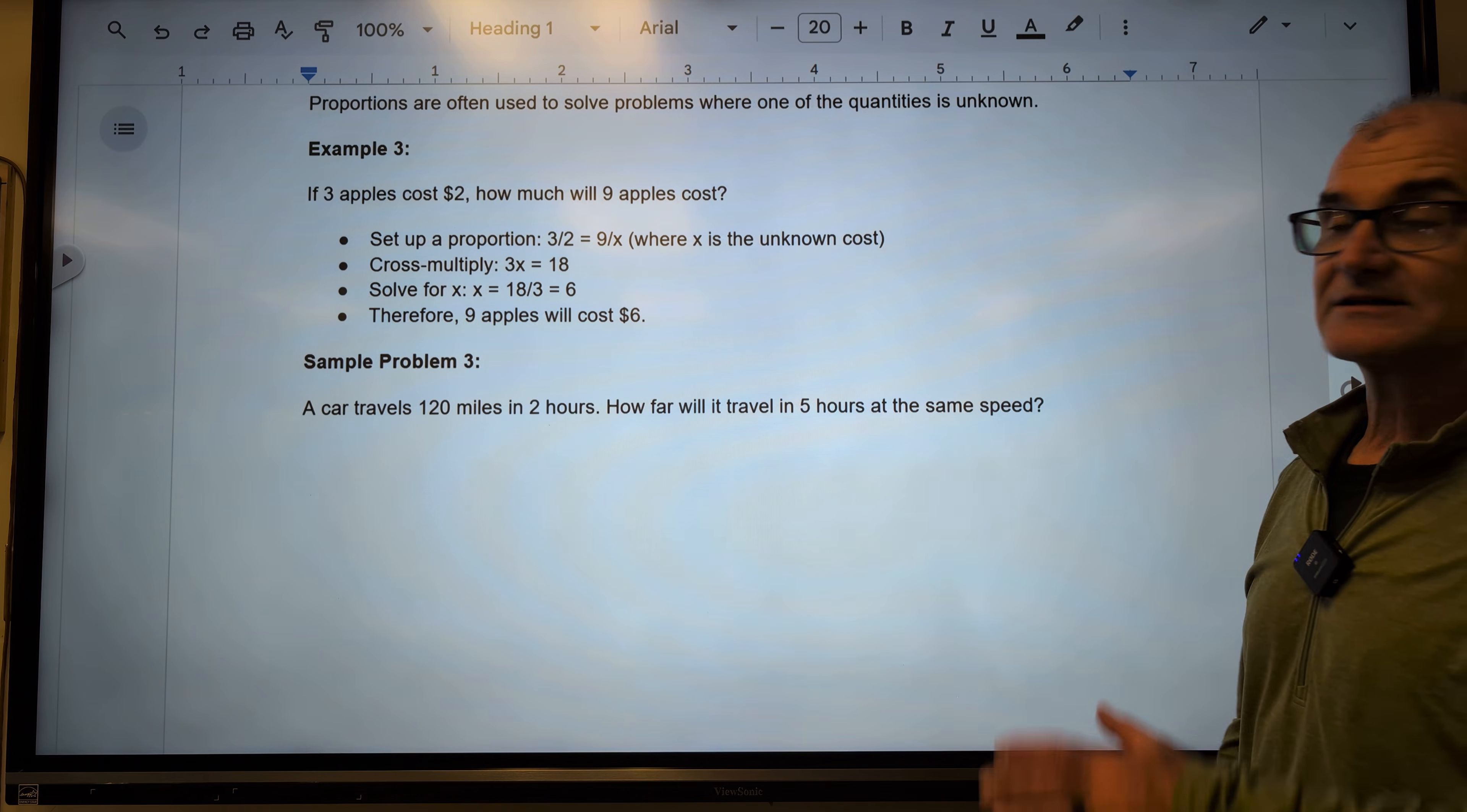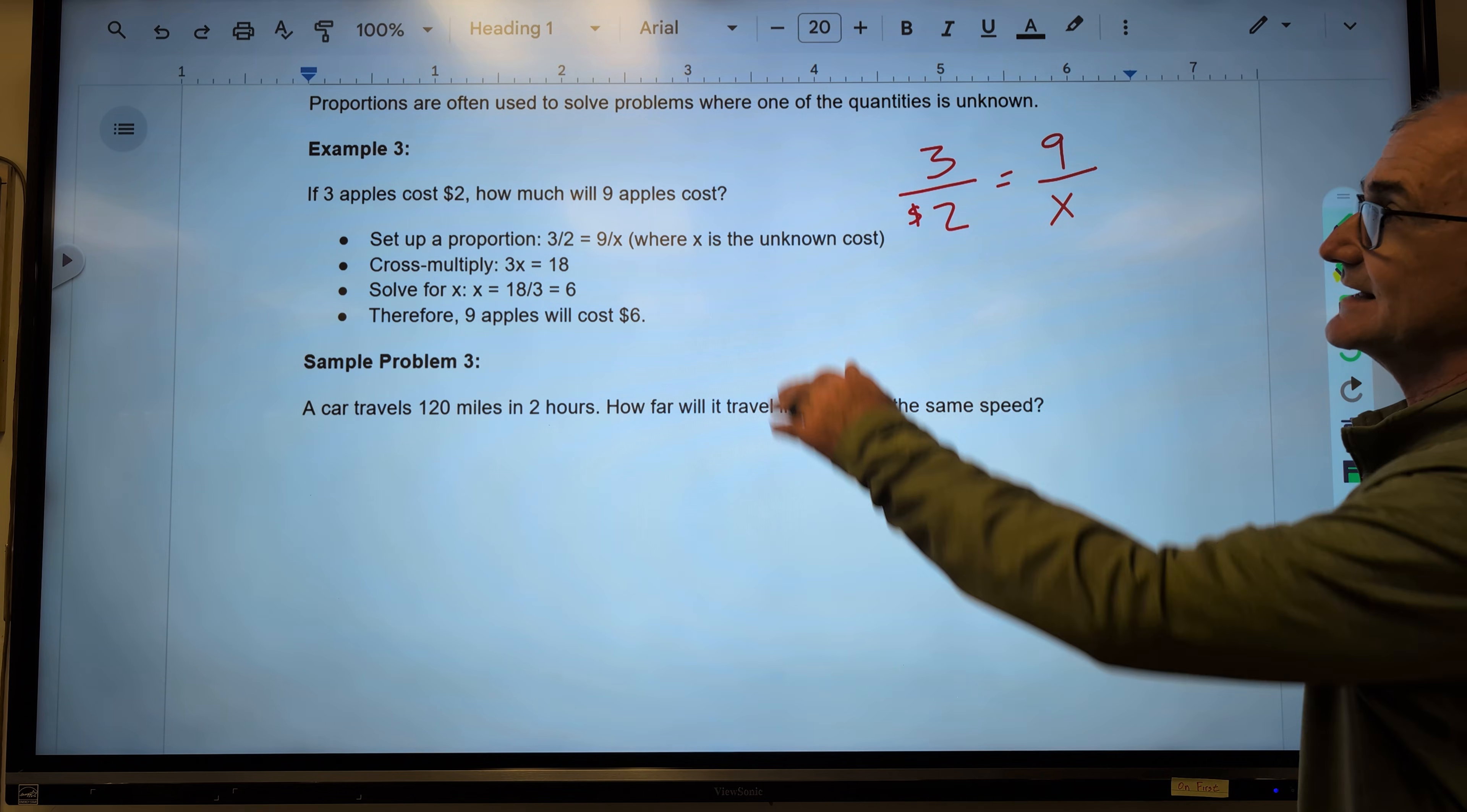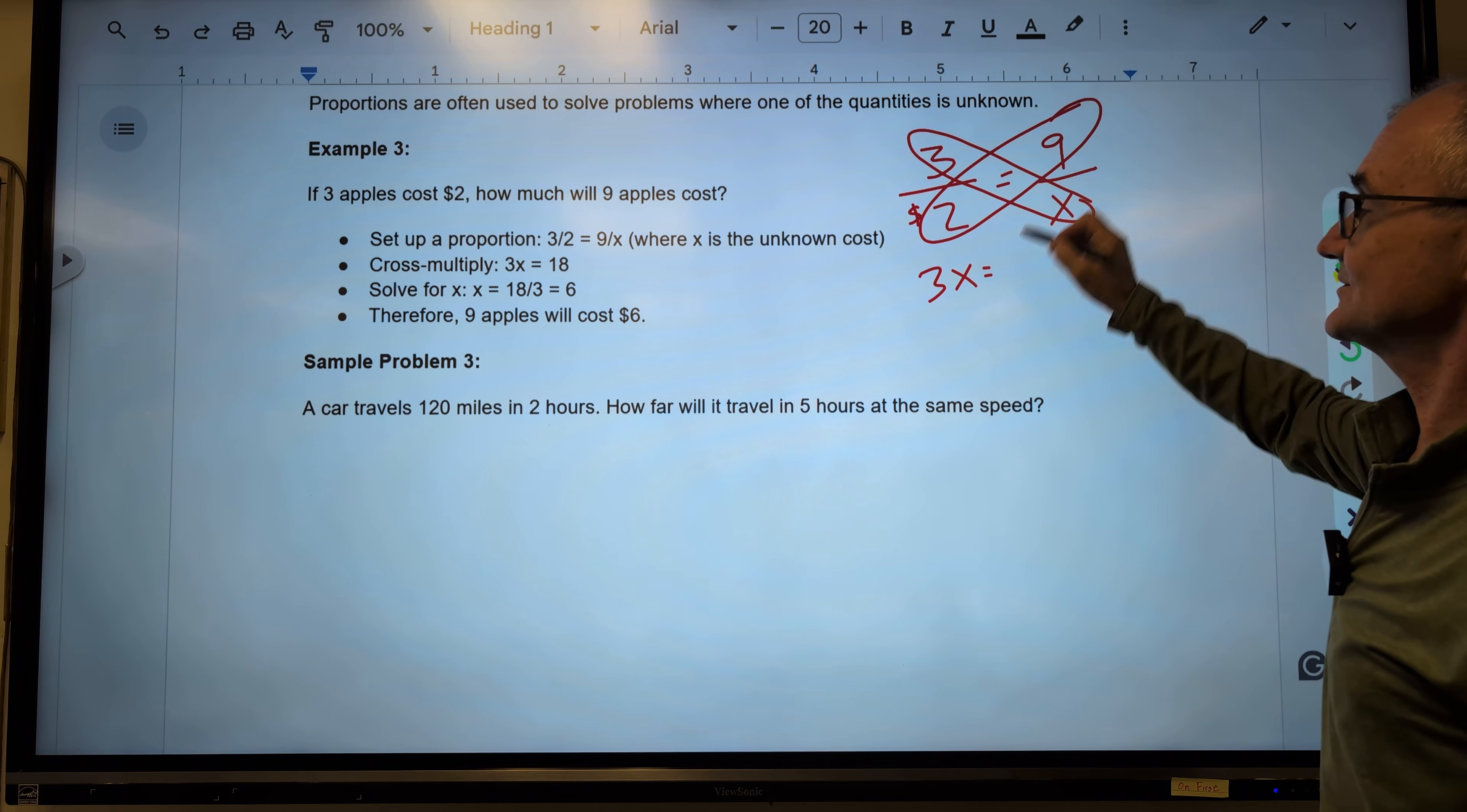Okay, let's take a look at example 3 here. If 3 apples cost $2, how much will 9 apples cost? So it is important that as I read it, I lay it out that way, that apples stay on top and dollars stay on the bottom. Now that I have that, I could cross-multiply again. I have 3x is equal to 9 times 2, 18.